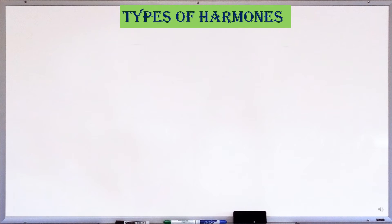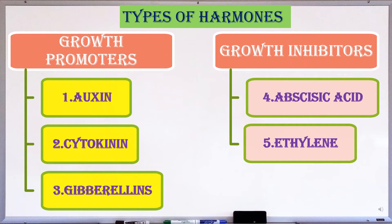There are five major classes of plant hormones. They are auxin, cytokinin, gibberellins, abscisic acid and ethylene. Among all these, plant hormones auxin, cytokinin and gibberellin promote growth, while abscisic acid and ethylene inhibit plant growth.